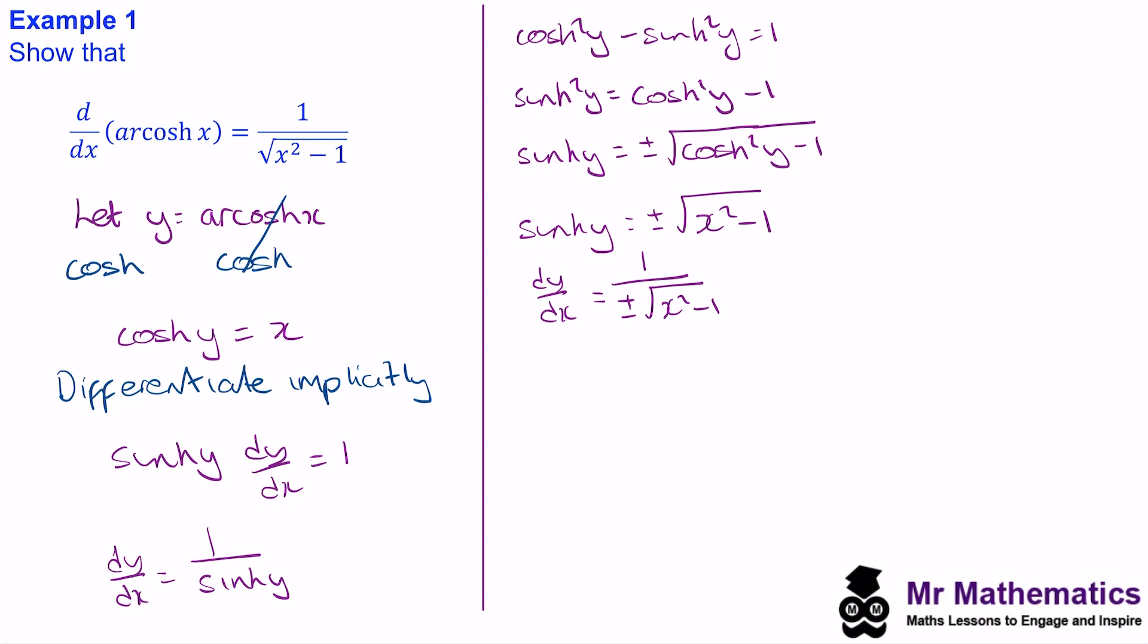But to understand why we don't have a negative, we need to think about the graph of arcosh of x. If you remember from my previous video on inverse hyperbolic functions, we found that arcosh y is always an increasing function. Therefore, its gradient will never be negative. So this negative, we can cancel. So here we have a gradient function for arcosh of x.